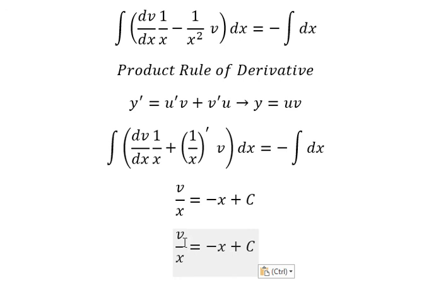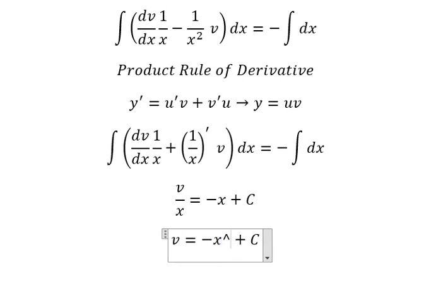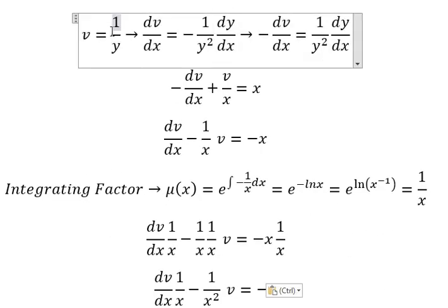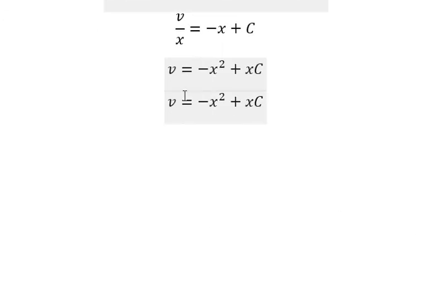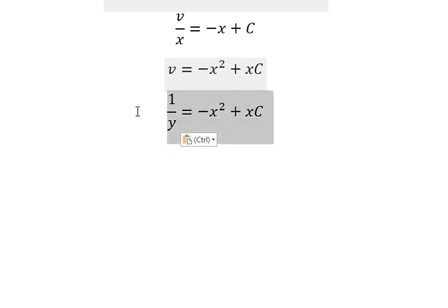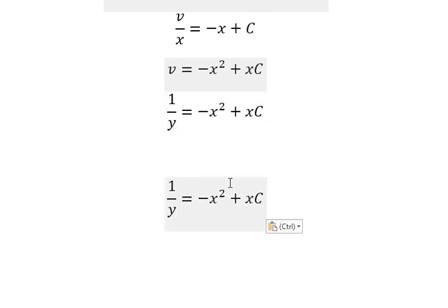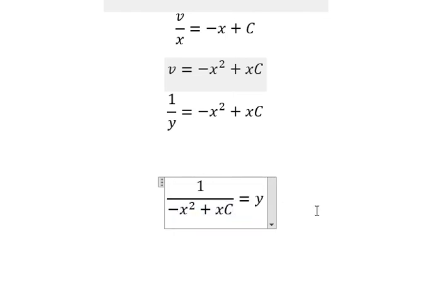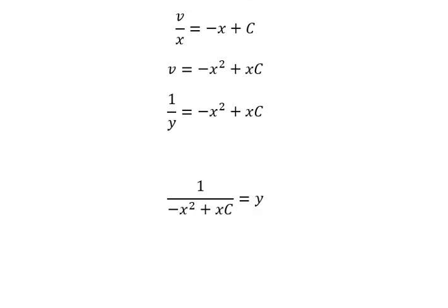We multiply both sides by x. We know that v equals 1 over y, so we substitute back. Moving terms appropriately, this gives us our final answer. Thank you for watching.